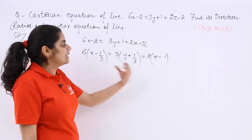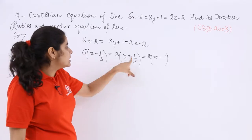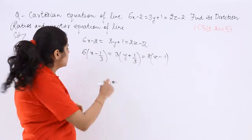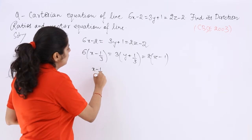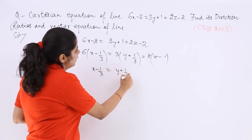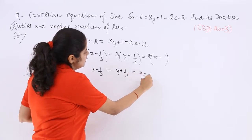Now you can simply take the LCM in order to eliminate these things which are coming out of the parenthesis. LCM of 3, 6, 2 would be 6. So it is x-1 by 3, here it is y plus 1 by 3, and here it is z-1.